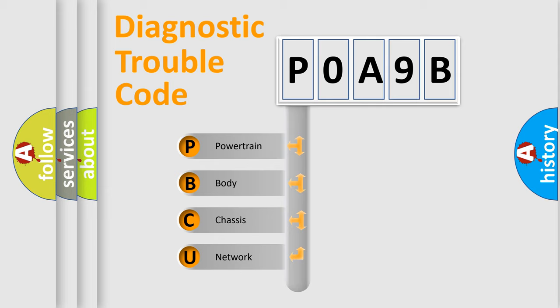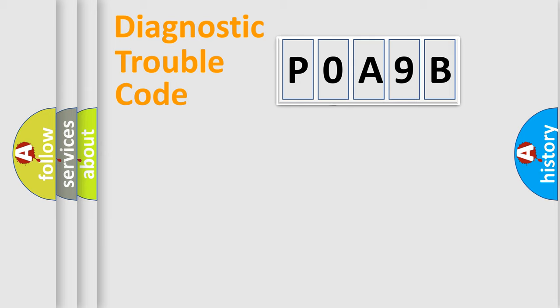We divide the electric system of automobile into four basic units: Powertrain, Body, Chassis, Network. This distribution is defined in the first character code.